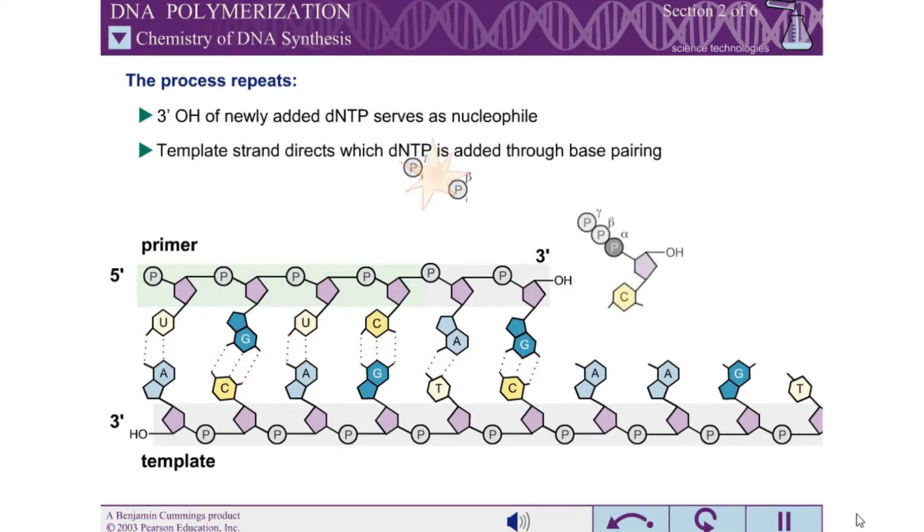The template strand directs which of the 4 possible DNTPs is added. During replication, the DNTP that base pairs with the template strand is highly favored for addition to the primer strand.